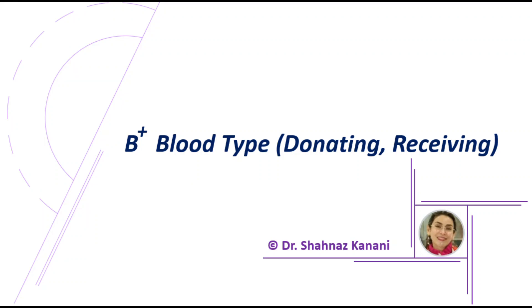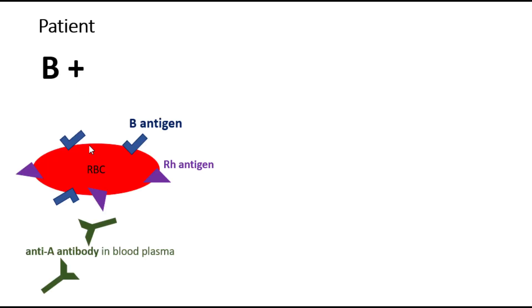In this video, I will explain donating and receiving B positive blood type. Let's start with a patient who has B positive blood type. That simply means that on the membrane of the red blood cell of this patient, we find B antigen. The positive also means the patient has Rh antigen or Rh factor on the membrane of the red blood cell.